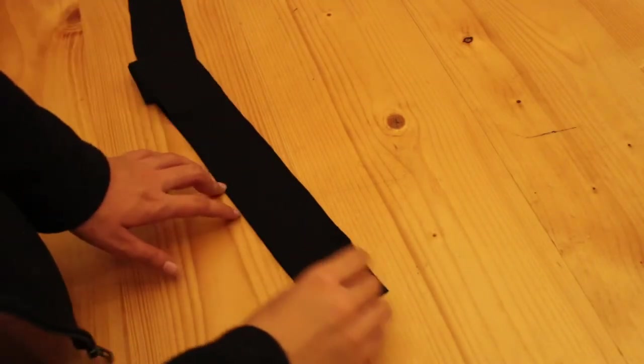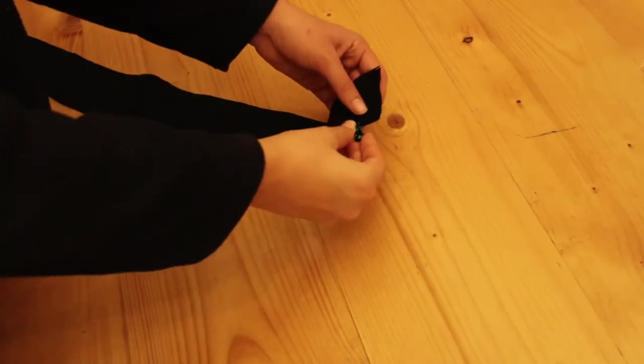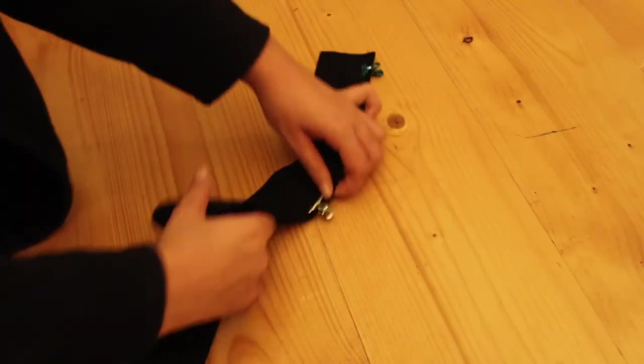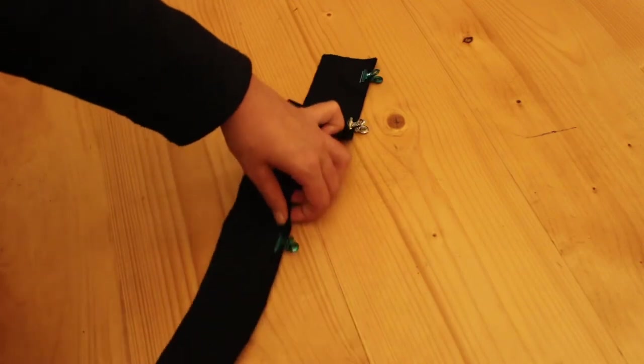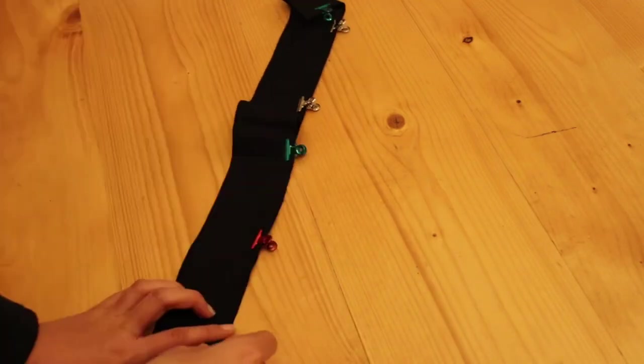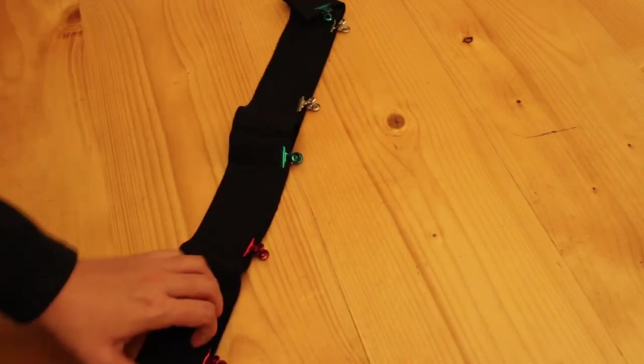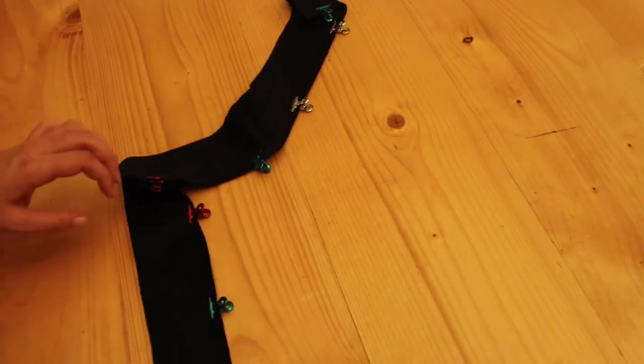Now you can take your fabric and your lining waistband piece, and you're going to pin the sides and the top with the right sides together. So you're going to pin everything, but you're going to leave the bottom open or just one side.